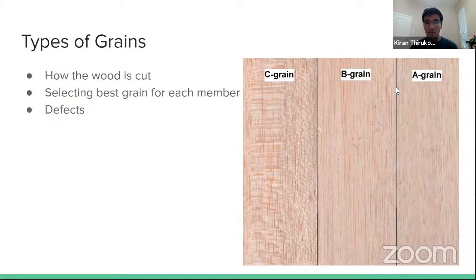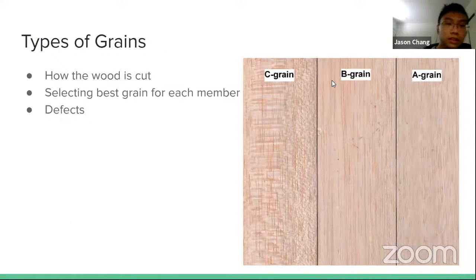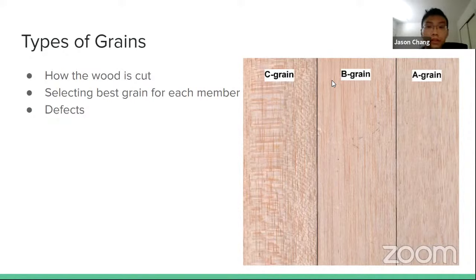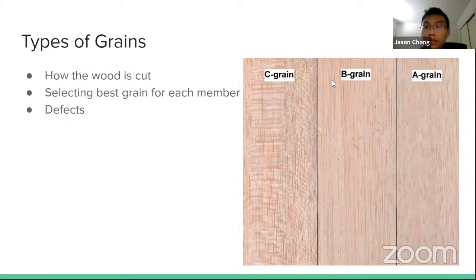Typically in the tension — the diagonal piece at the top — people use either basswood or A grain balsa. Basswood is slightly heavier and denser but more uniform, so people use it because it's less likely to accidentally break. For the compression, it's always made out of balsa. People can choose between A grain for the braces or crosses, and C grain for the main compression length. B grain is almost never used in any science event, except maybe flight events like elastic launch glider, and it's not used in Boomilever.